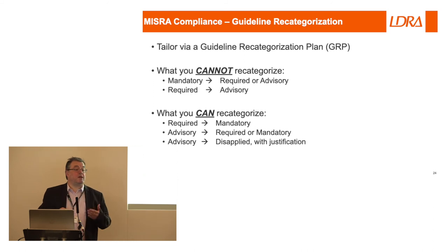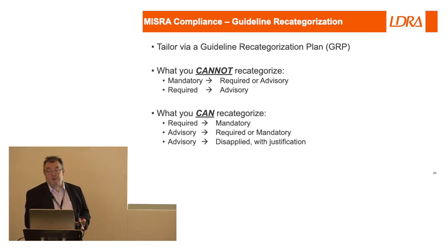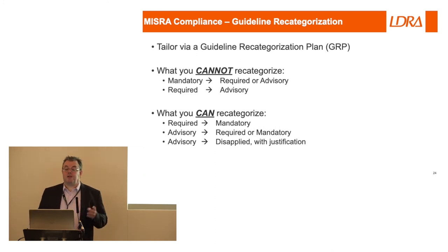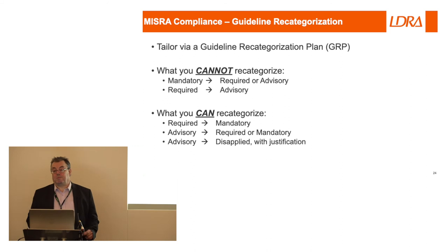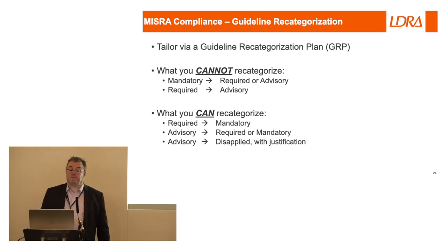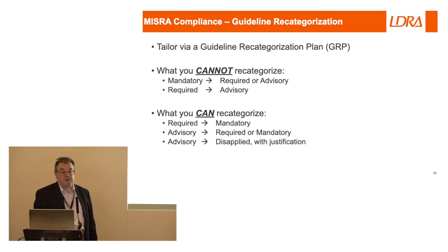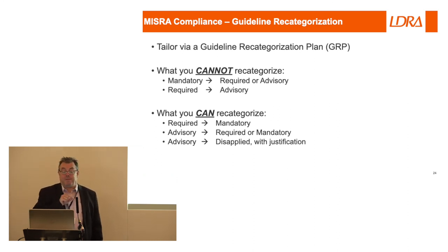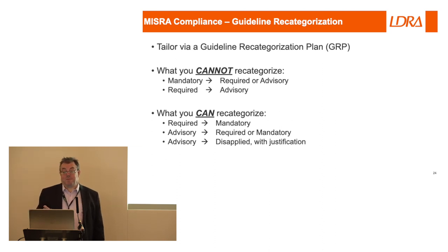A deviation isn't just documenting 'we have a problem' — it's 'we have a problem, we want to keep it; these are the consequences, these are the mitigations.' Previously the rules were advisory, required, and mandatory — fixed. Some people wanted to change that, so we said okay, we'll give you a process. You cannot downgrade a mandatory rule, and you cannot lower a required rule. What you can do is move a required rule up, or move an advisory rule up. But actually the step that has proven most popular is we now allow you to legitimately disapply advisory rules. What happened in the past is people just ignored advisory rules and pretended they didn't exist. We've brought that into scope — if you don't want to follow an advisory rule, justify it; don't just pretend it doesn't exist.